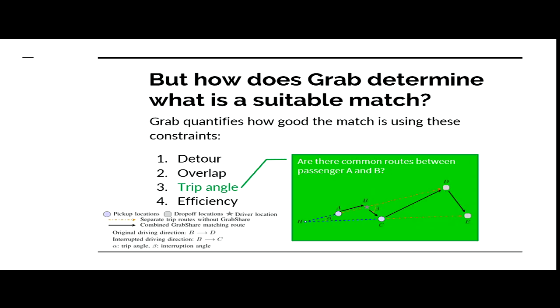Following that is the trip angle. What this trip angle means is that they have an arbitrary angle to maneuver around such that it wouldn't be too far off to become like a U-turn, and it seems to be like a detour instead.